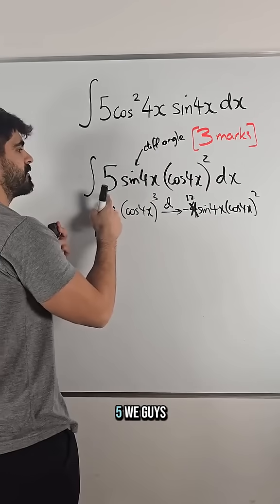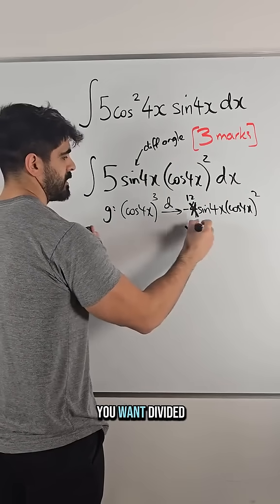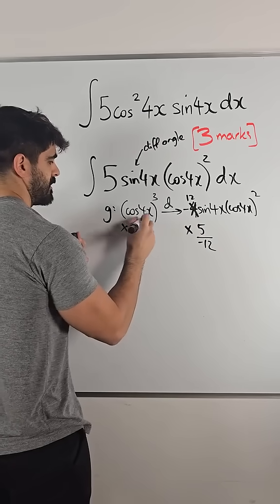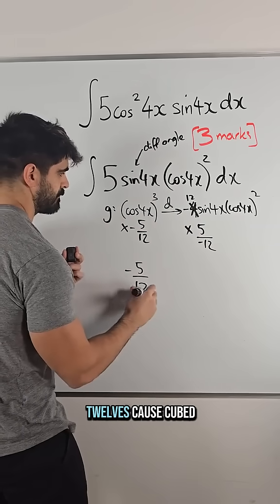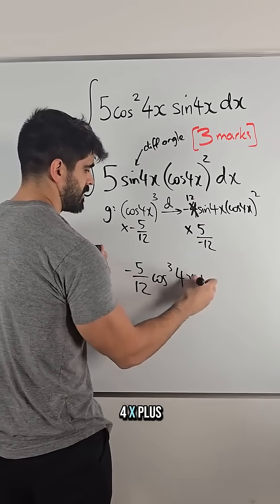But we wanted 5. All you guys need to remember is this. You multiply both sides by what you want, divided by what you have, which is minus 12. And there's your answer mate. So my answer is minus 5 twelfths cos cubed 4x plus c.